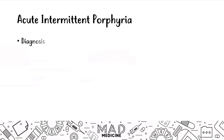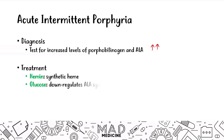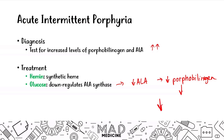When it comes to diagnosis, you test for increased levels of porphobilinogen and ALA. If both are elevated, you can assume that porphobilinogen deaminase is not functioning properly. For treatment, you can use hemin, which is synthetic heme, and you can also use glucose to down-regulate ALA synthase. By down-regulating ALA synthase you decrease ALA, which leads to a decrease in porphobilinogen and improvement of symptoms.